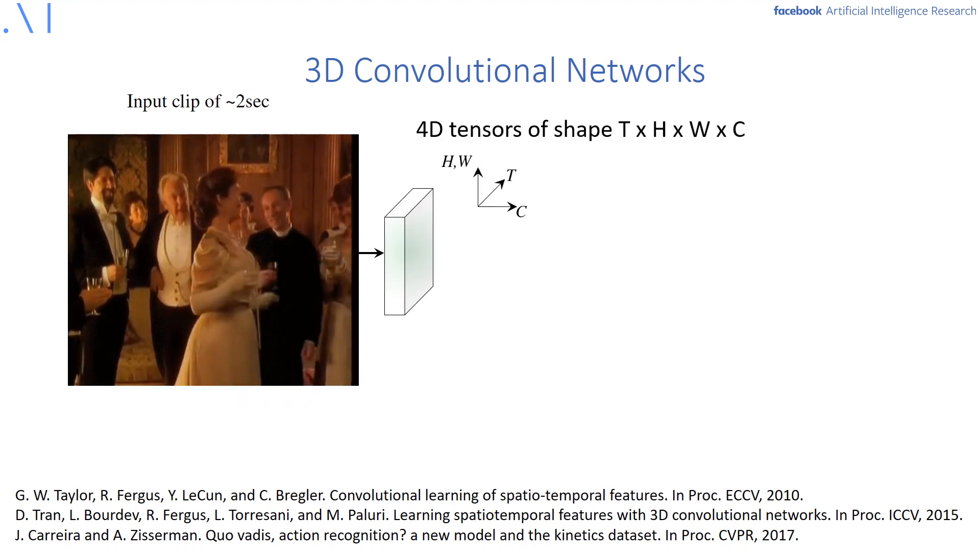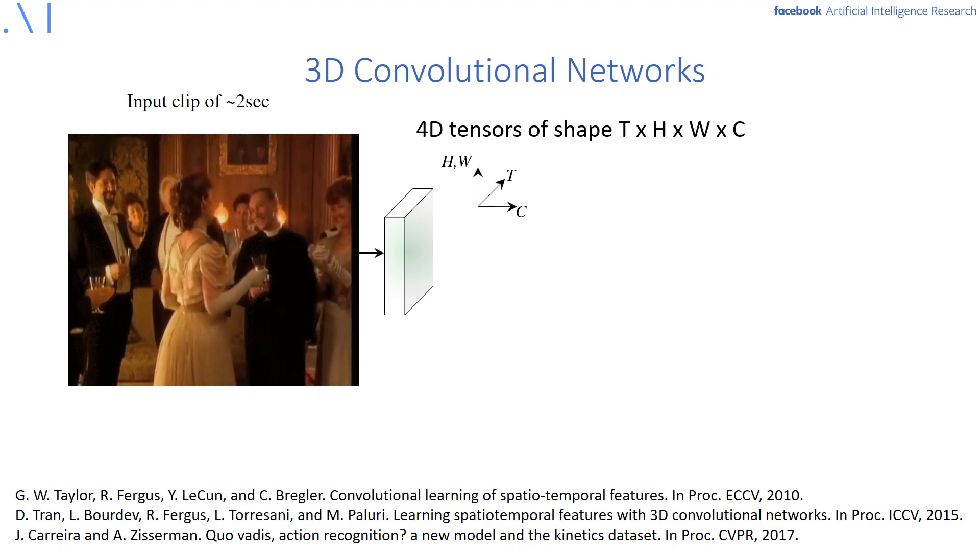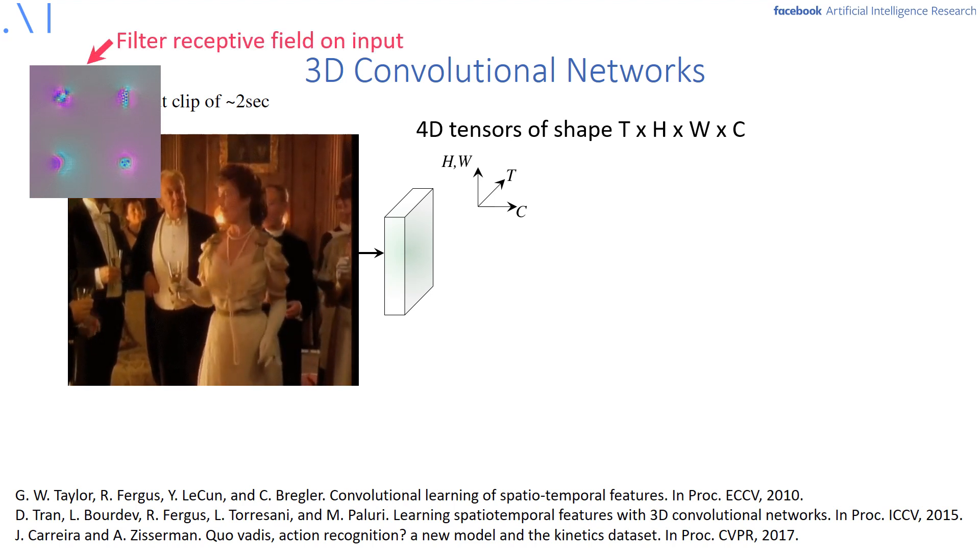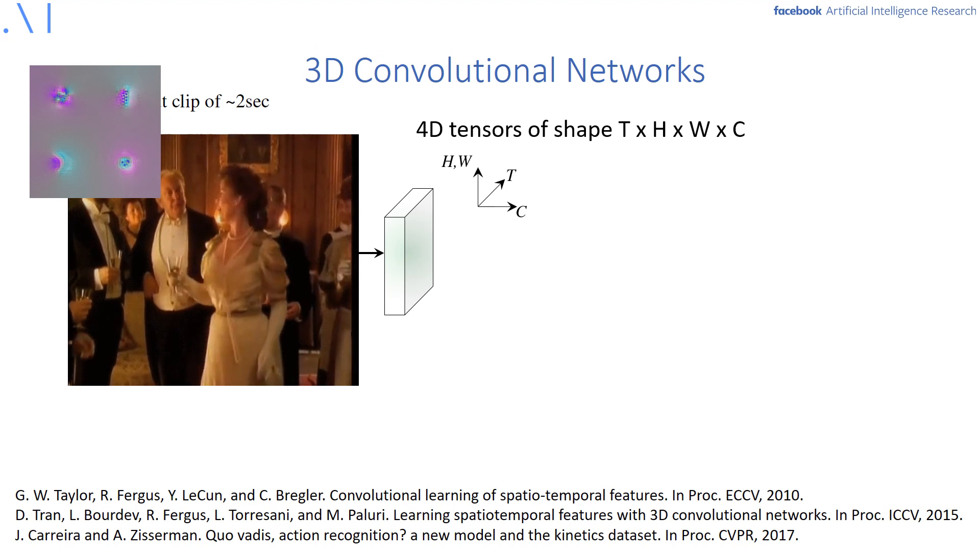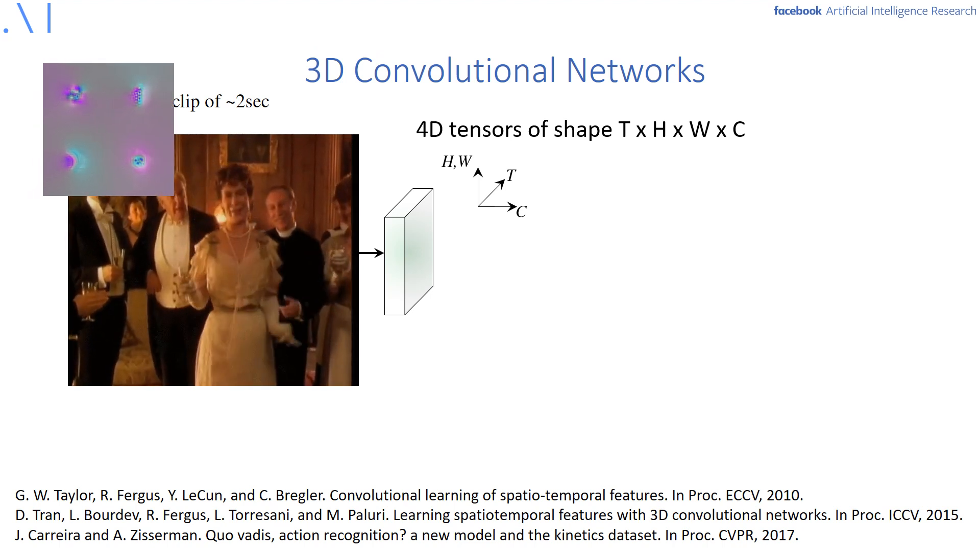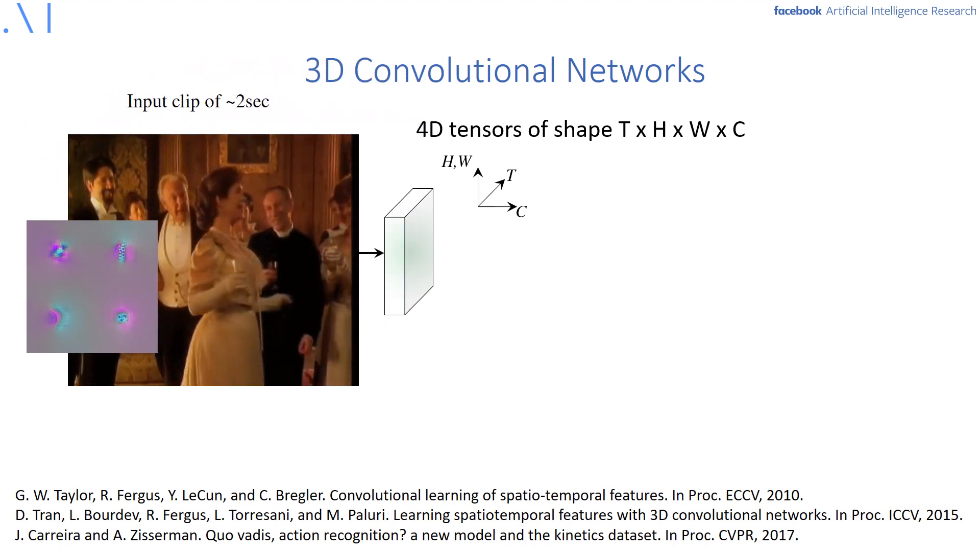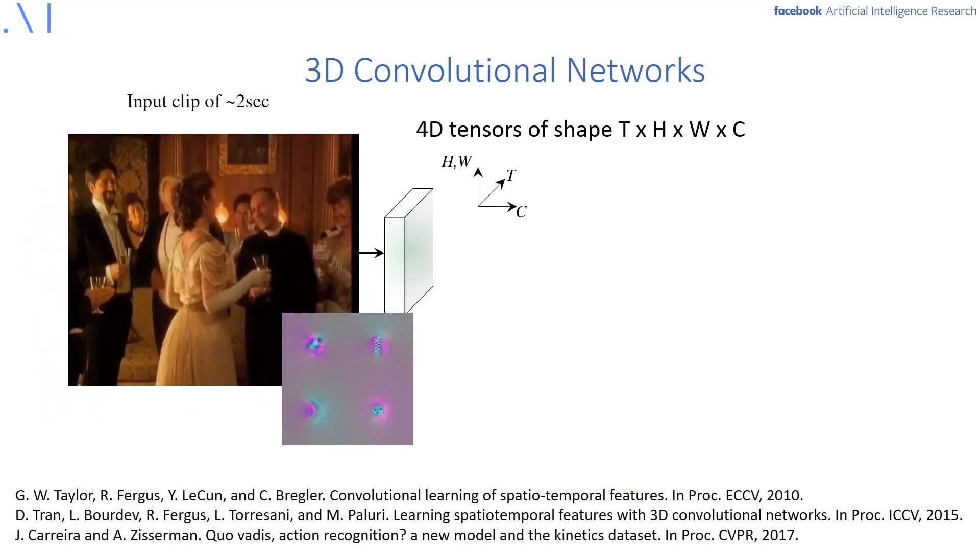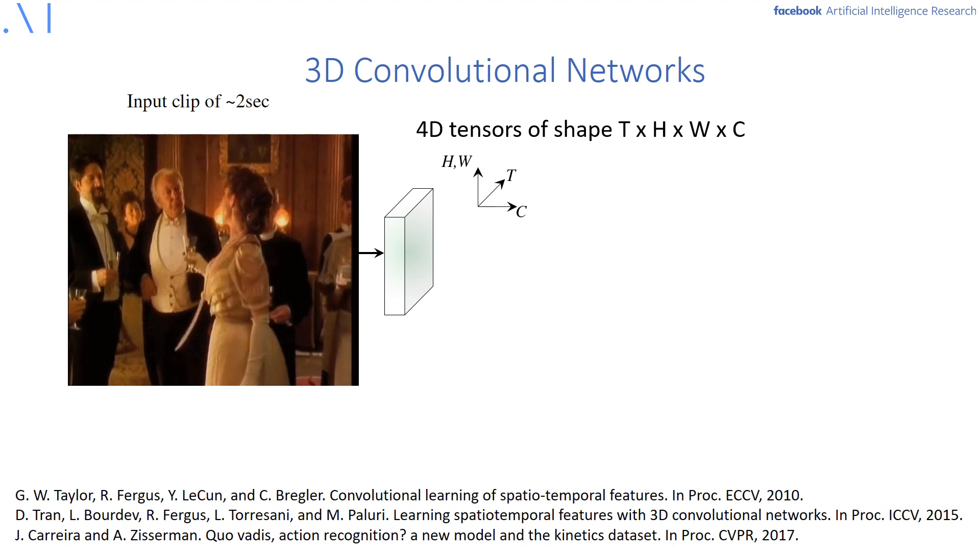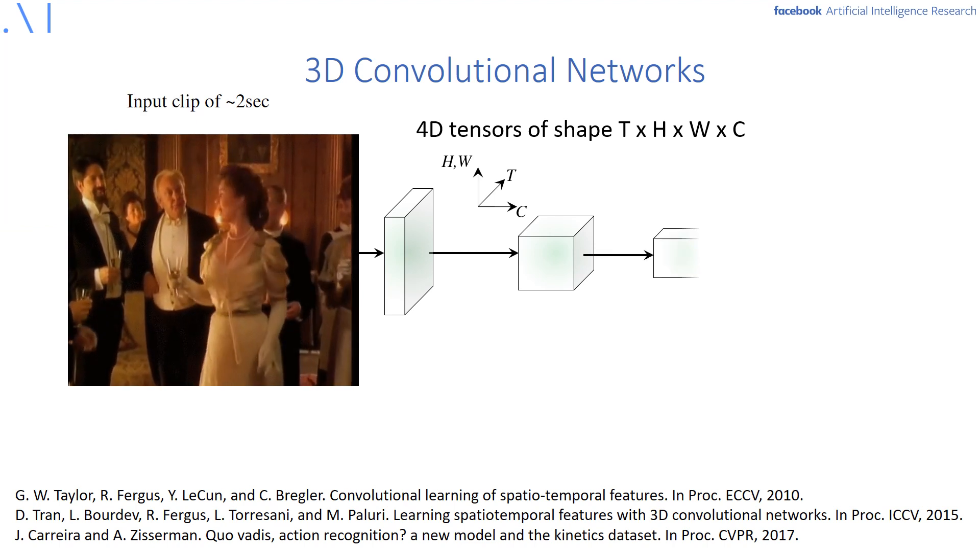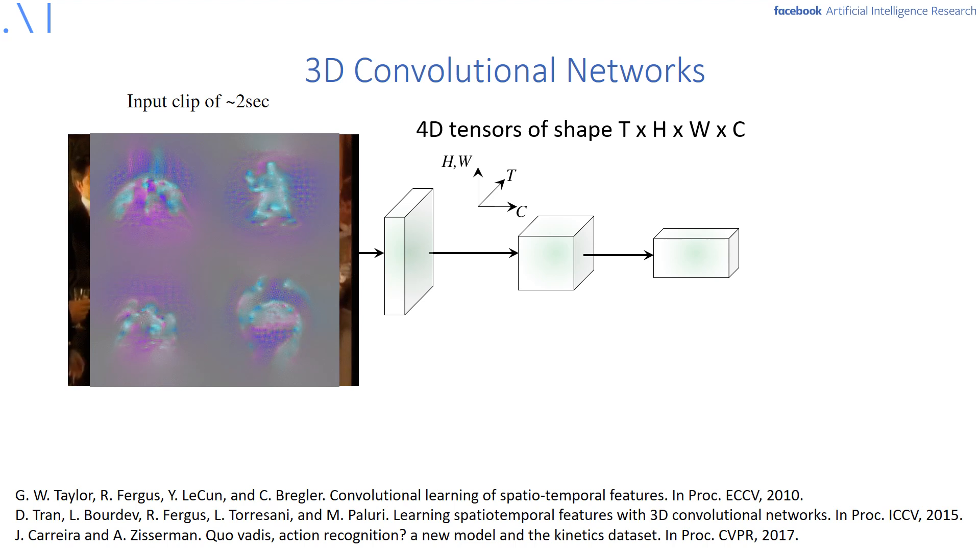The output of each convolution stage are 4D tensors of shape T times H times W times C for the time, height, width and channel dimensions. A 3D ConvNet simply consists of several layers of 3D convolution and after each filtering stage, the receptive field of the filters on the input increases. The network reduces the spatial-temporal resolution of the output tensors from the input to the output, while it increases the number of channels C of the filters until the prediction is formed at the output.